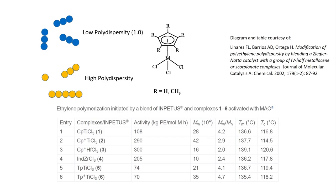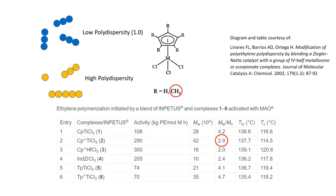Much research has been carried out in terms of measuring and understanding polydispersity. According to Linares and Vareos, alterations of the catalysts used in ethylene production will produce different polydispersities. We can see in their work using metal complex catalysts that there is a 31% decrease in polydispersity just from changing the cyclopentadienyl ligand to a pentamethylcyclopentadienyl ligand.